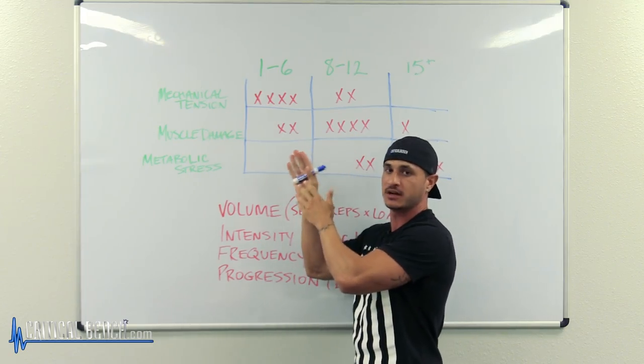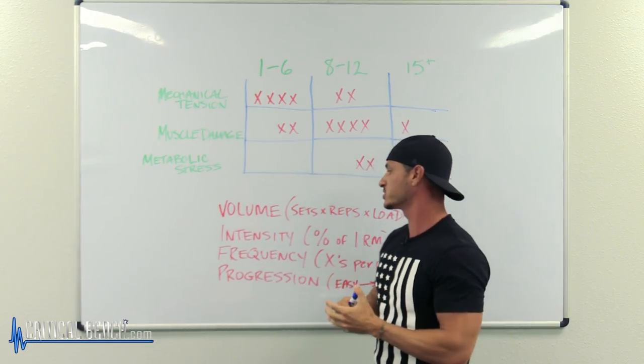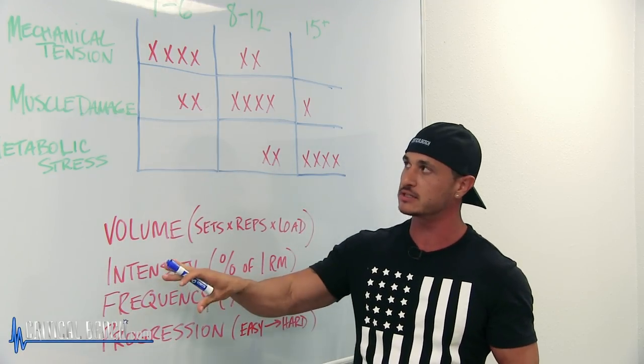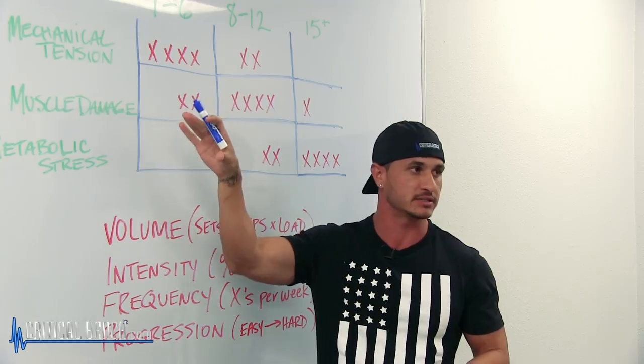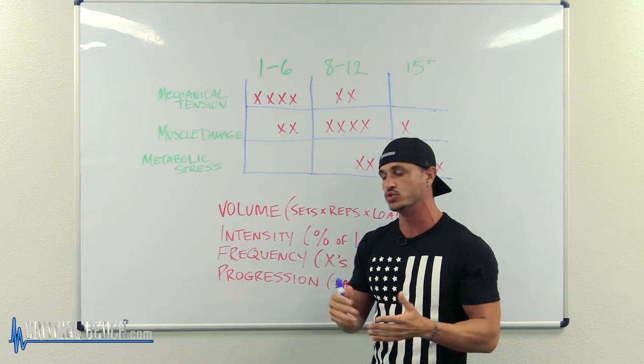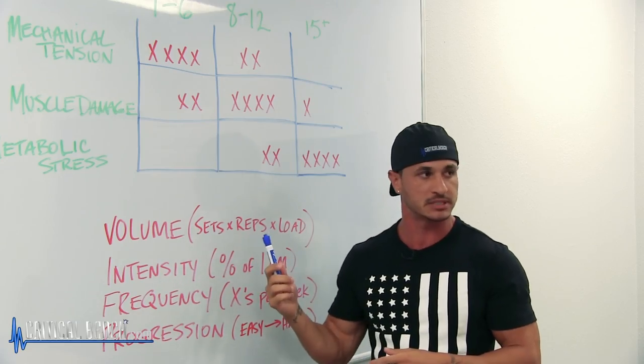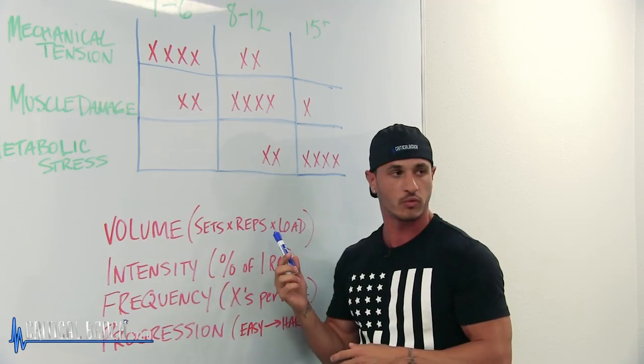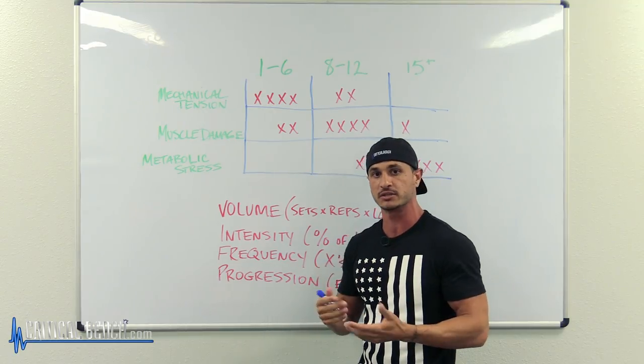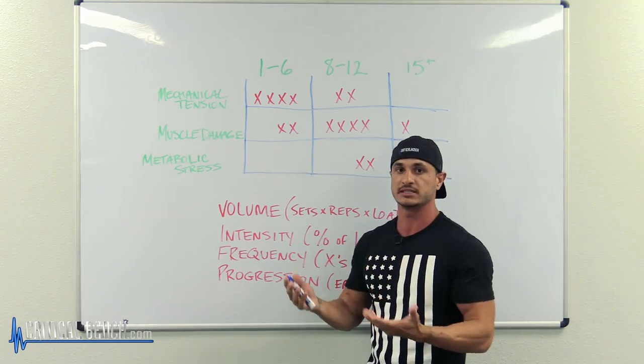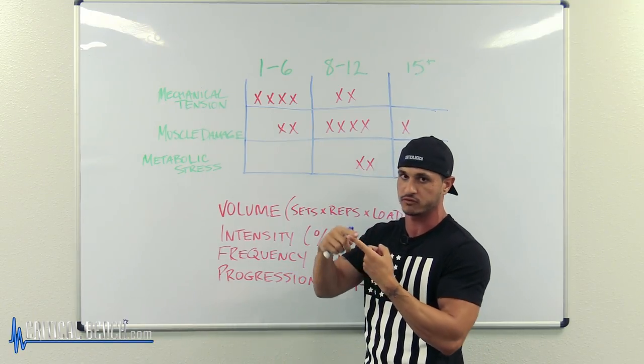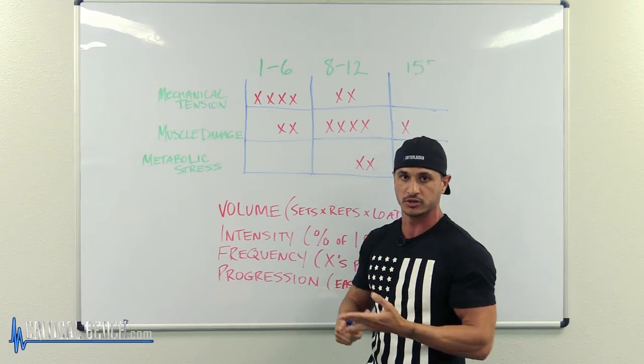Now that we understand the three mechanisms of hypertrophy or muscle growth, now let's talk about the four main variables in your training. When you understand these, this will make more sense. So let's talk about volume. Volume is essentially the amount of work that you do: sets times reps times load. The reason that your reps are important is, number one, they determine how long the muscle stays under tension, which dictates what energy system we use to move that weight.